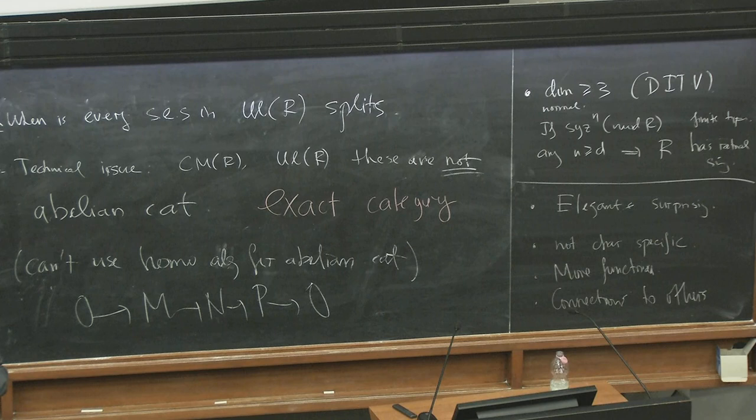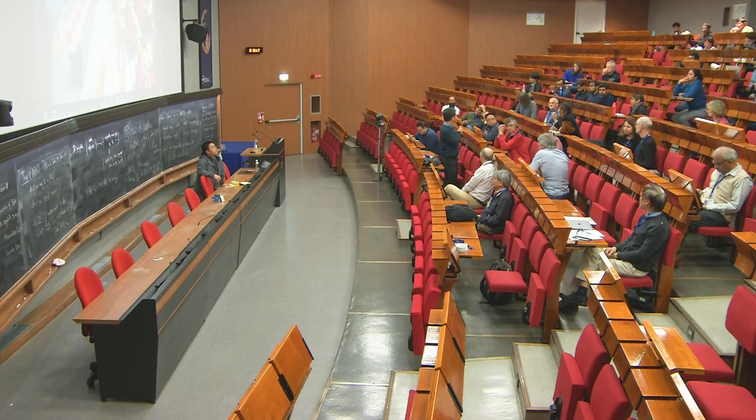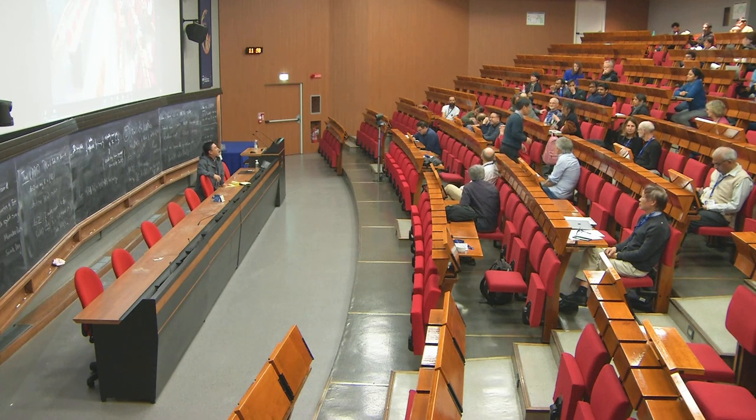You write out the axioms. It took a page to write down. But that turned out to work in many cases. CMR, Ulrich R are exact categories. It's not obvious, you need to prove it. But once you have that exact category, then you can import some tools. We proved results that give very concrete numerical conditions for when it becomes sub-functors.